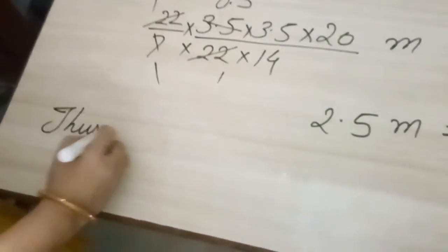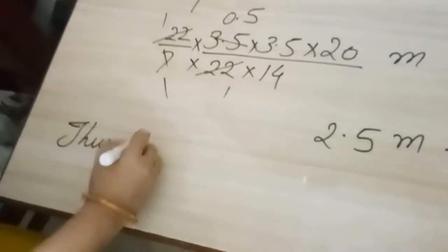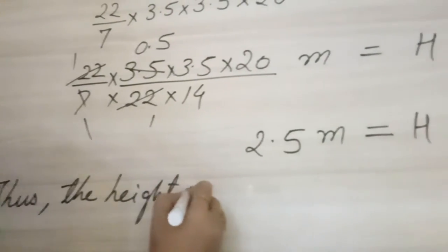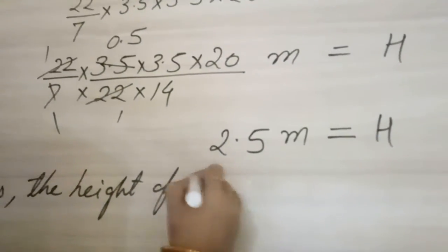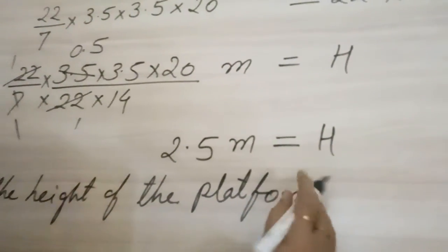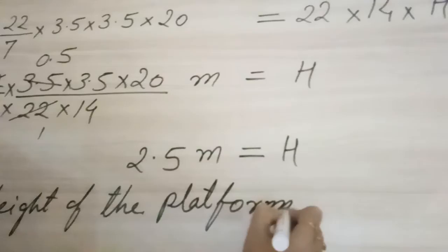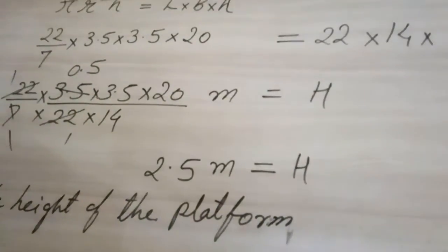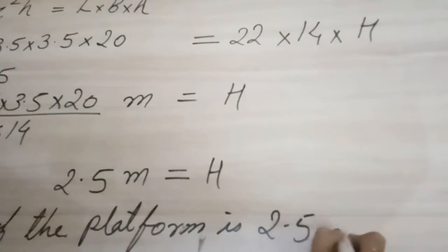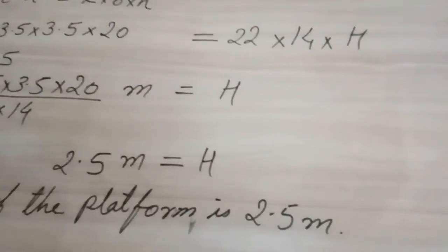So we will write here: thus the height of the platform is 2.5.